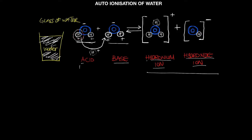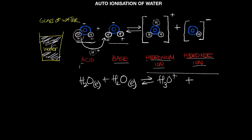Chemically, we can write: water in the liquid state reacts with another water molecule in the liquid state, and it will form the hydronium ion plus the hydroxide ion, both in the aqueous state. So water ionizes itself and forms ions — it forms the ionic product.